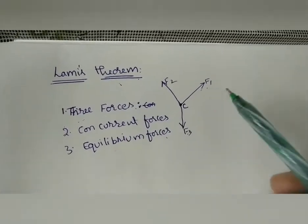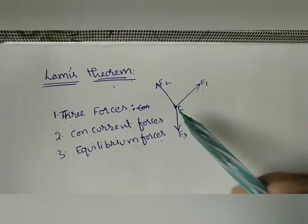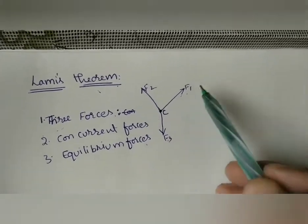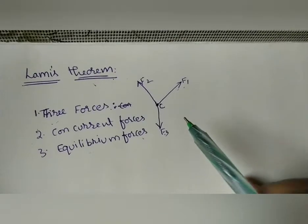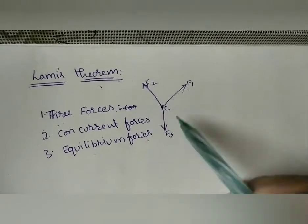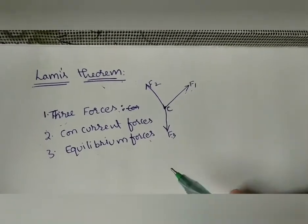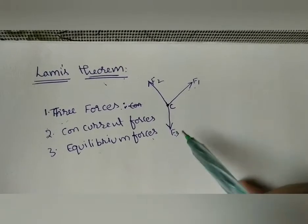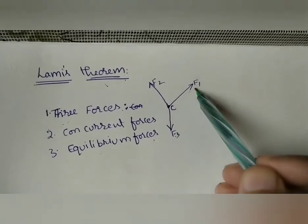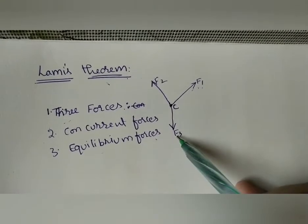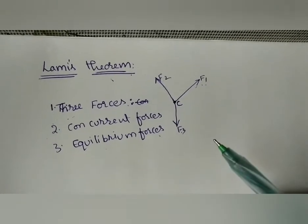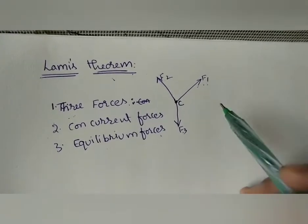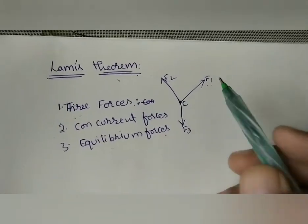According to this theorem, we can find any two unknown forces. For example, if we know only F1, we can find the other two unknown forces. Similarly, if we know F2, we can find F1 and F3. That is how we find the unknown forces using Lami's Theorem.